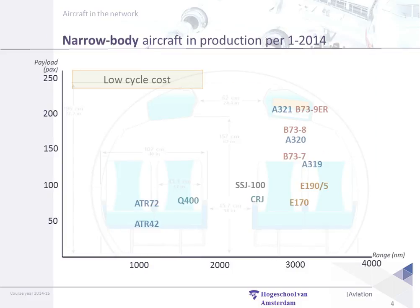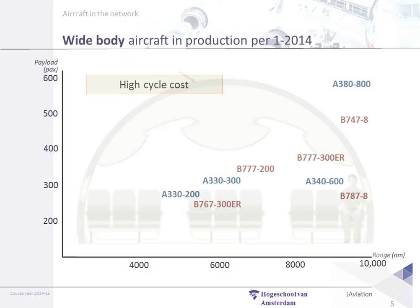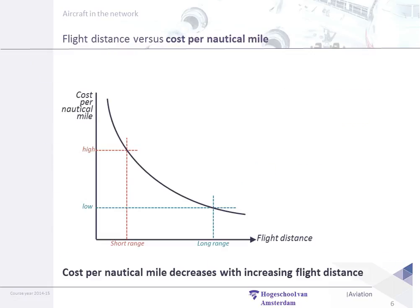Narrow bodies very logically have low cycle costs, short operations, less operations. Wide body aircraft have high cycle costs. This doesn't per se make wide body aircraft more expensive to operate, and that doesn't mean their margins are lower — in the contrary actually. If you look at this curve, we're looking at the cost per nautical mile, and what we see is that when the distance increases the cost per nautical mile decreases. If our cycle cost excluding fuel is 100 euros and we fly 10 nautical miles, our cost per nautical mile is 10 euros. If we fly 100 nautical miles, our cost per nautical mile is 1 euro. That's why long distances have lower cost per nautical mile.